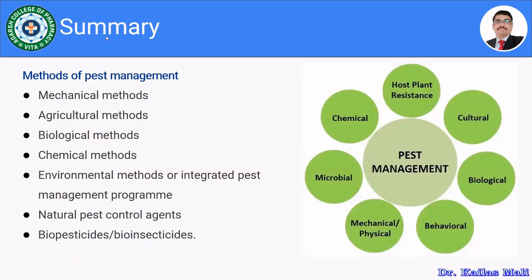So here we have finished the pest and pest management chapter. In this session, we discussed pest management and its various methods: mechanical methods, agricultural methods, biological methods, chemical methods, environmental methods or integrated pest management program, natural pest control agents, and finally biopesticides and bioinsecticides along with the hazardous effects of synthetic pesticides and their modes of action. Here we have finished the chapter on pharmacognosy and research.